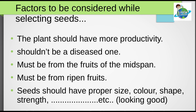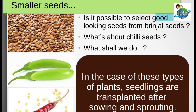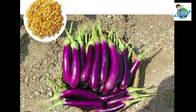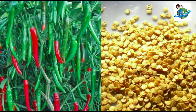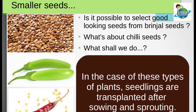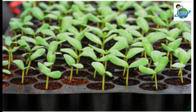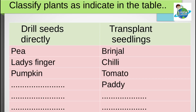You know, some seeds are so small. Is it possible to select good-looking seeds from brinjal seeds? What about our chili seeds? What shall we do then? In the case of these types of plants, seedlings are transplanted after sowing and sprouting. Now, classify the plants as indicated in the table. In the table there are two columns: first one — drill seeds directly to the soil; next one — transplant seedlings.